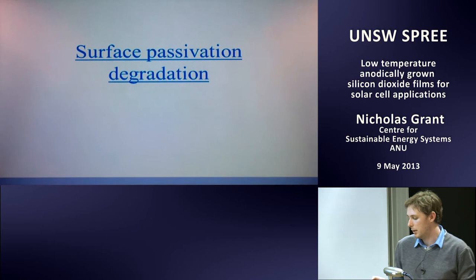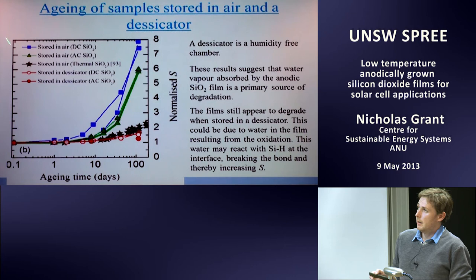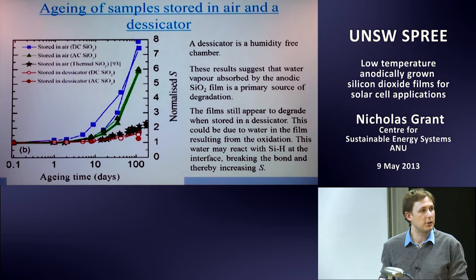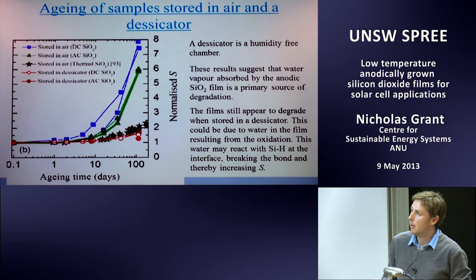Now for degradation — probably the worst aspect. Samples — both DC and AC oxidized — stored in air degrade quite fast. After 10 days, surface recombination is getting bad. After a few months it's really bad and unacceptable. Sister wafers with thermal silicon dioxide also degrade, but nowhere near as badly. However, if you store samples in a desiccator — a humidity-free environment with very little water vapor — degradation is far less, though there is still some.